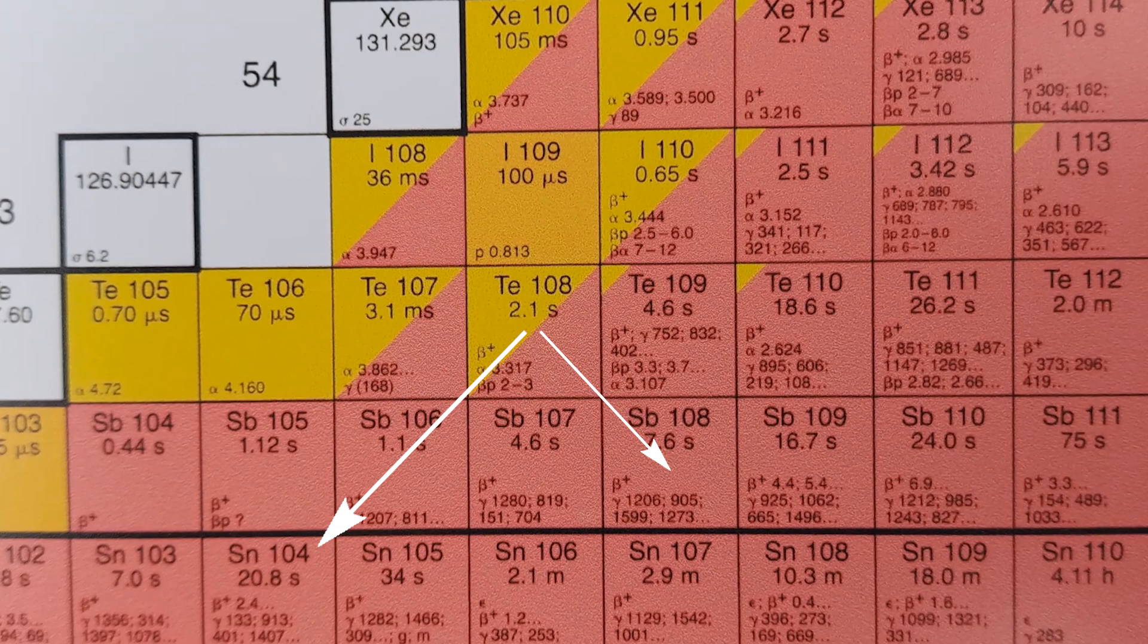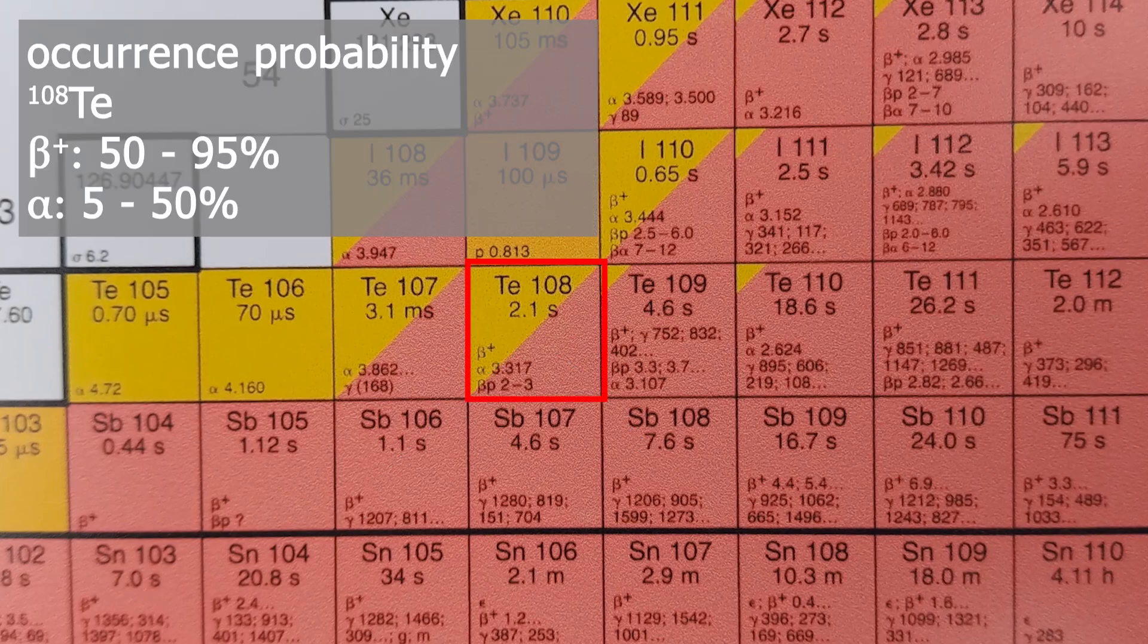The probability of the beta plus decay lies between 50 and 95 percent while the probability of an alpha decay lies between 5 and 50 percent.